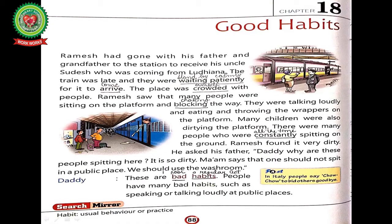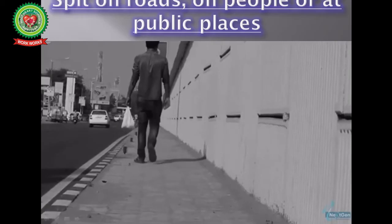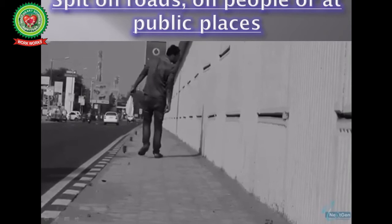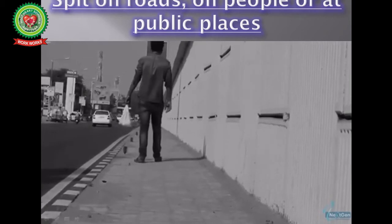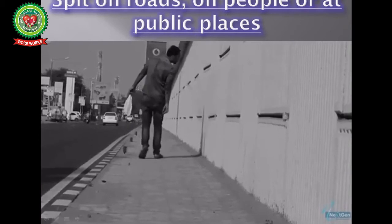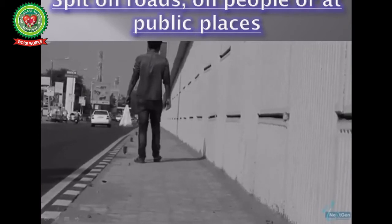There were many people who were constantly spitting on the ground — underline 'constantly,' meaning: all the time. Ramesh found it very dirty. He asked his father, 'Daddy, why are these people spitting here? It is so dirty. Ma'am says one should not spit in a public place — we should use the washroom.' Ramesh also saw some people spitting on the ground. Spitting on roads or at public places is a bad habit that spreads germs — for spitting, we should use only the washroom.